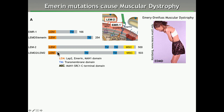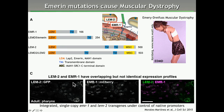Both proteins, Emerin and LEM-2, are expressed throughout the animal. But when we compare them inside the same animal, we can see that neurons have a higher level of expression of Emerin, whereas intestinal cells show more LEM-2. This suggests that these two proteins might have tissue-specific functions in nuclear organization, and that is what we are studying.